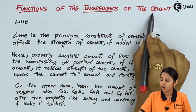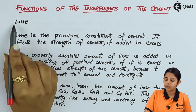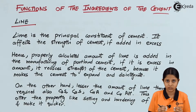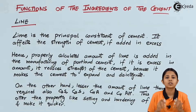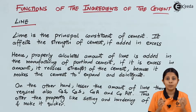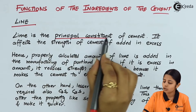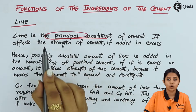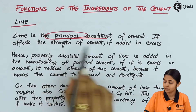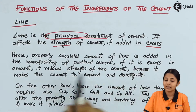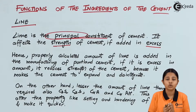Functions of the Ingredients of Cement. The first one is Lime, and Lime is one of the most important ones. Lime is one of the major constituents of cement and is present in one of the highest proportions. Both setting and hardening properties of cement are highly influenced by Lime. It is the principal constituent — the most important constituent present in cement. It affects the strength of cement if added in excess, and that is why a certain proportion must be maintained.